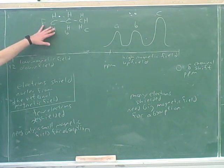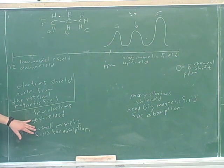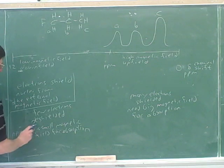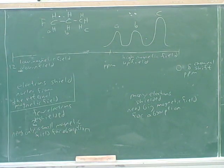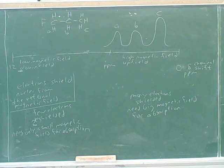So this shows that if you're close to something electronegative, you'll be deshielded, which is downfield. Maybe just as a memory aid — downfield starts with a D, and deshielded starts with a D. So those are both the same side, which is the left-hand side of our horizontal axis here.